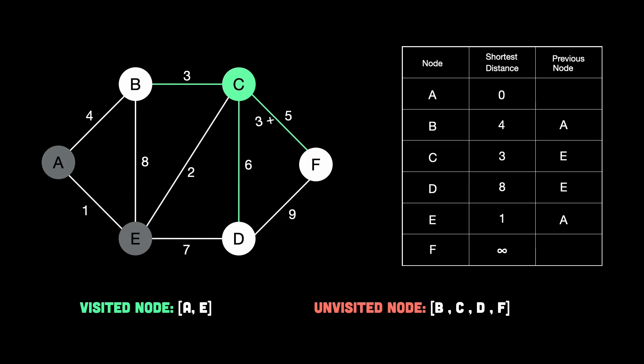Then C to F costs 5. So total is equal to 3 plus 5, which is equal to 8. Now F currently has infinity. And infinity versus 8, 8 wins, obviously. So we update F to 8 and set its previous node to C. Now that's all the neighbors for C. So now we mark C visited. And you can see the updated table for reference.